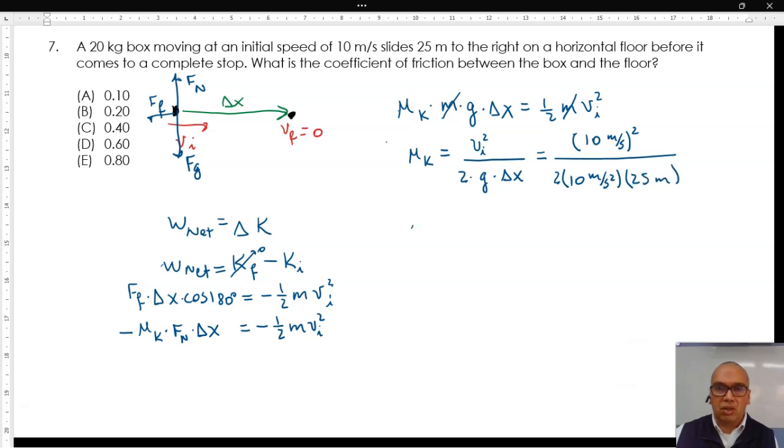The coefficient of friction is then 100 over 500, or 0.20. That is option B.